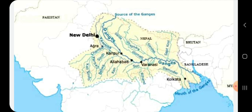Look at the map. We are going to discuss about the Ganga Basin. To the east of the Sutlej Basin lies the Ganga Basin. It is the largest part of the Northern Fertile Plains. Delhi, Uttarakhand, Uttar Pradesh, Bihar and West Bengal lie in this part.